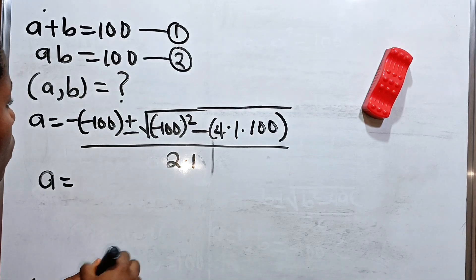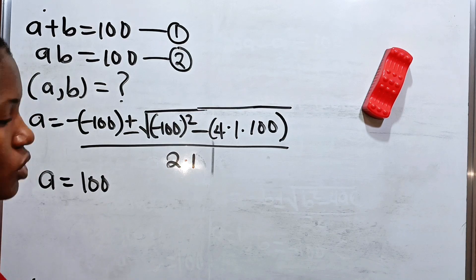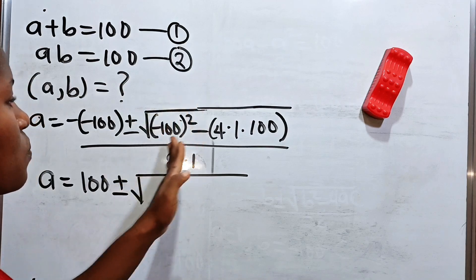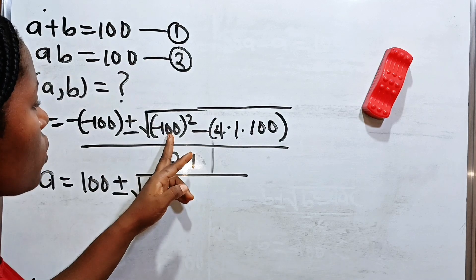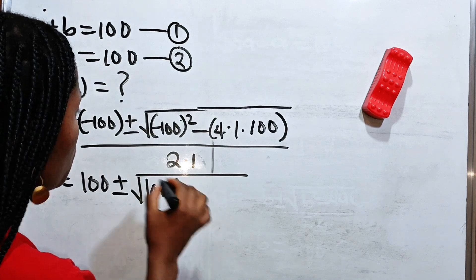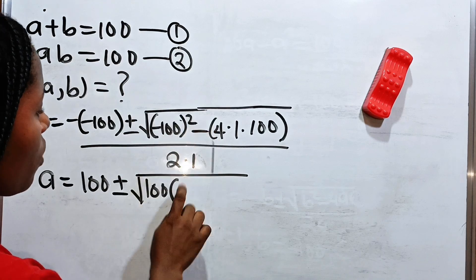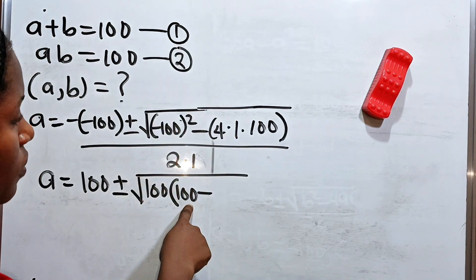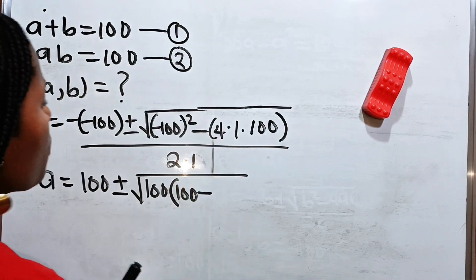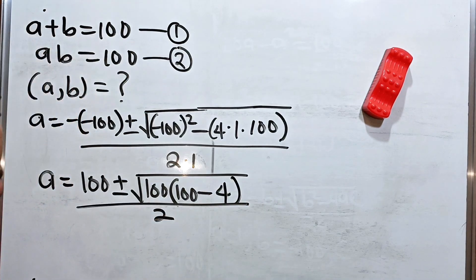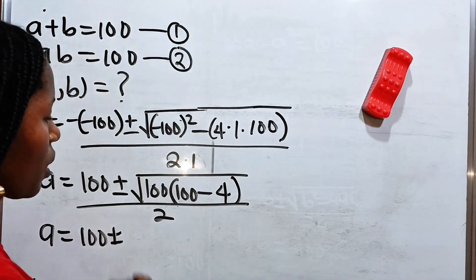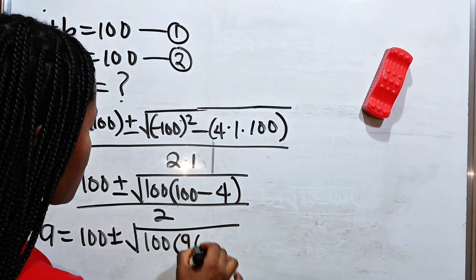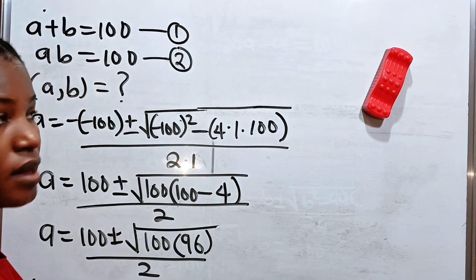So we can say that A is equal to — minus times minus gives us plus — so we have 100 plus or minus the square root of minus 100 squared, and minus minus gives us plus, so this is more or less 100 squared. Because we have 100 here and 100 here, let's factorize 100 out. So we bring out 100; when you remove 100 from here, 100 will still remain; this divided by this, 100 will remain, and this divided by this, 4 will remain. So A is equal to 100 plus or minus the square root of 100 brackets, and 100 minus 4 gives us 96, everything divided by 2.